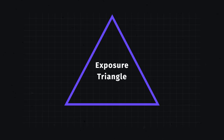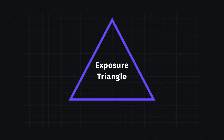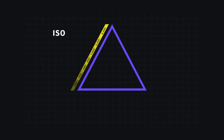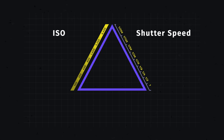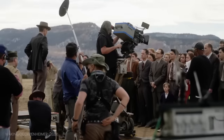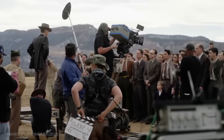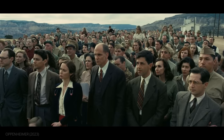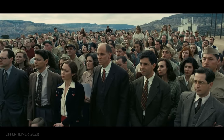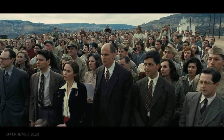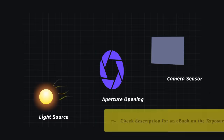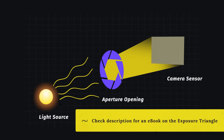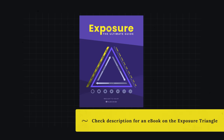Exposure is controlled using three elements: ISO, shutter speed, and aperture. Once a photographer or cinematographer knows the amount of light, they can adjust these elements to obtain the desired exposure. For a deep dive into the Exposure Triangle, a playlist of videos and our free e-book are linked in the description.